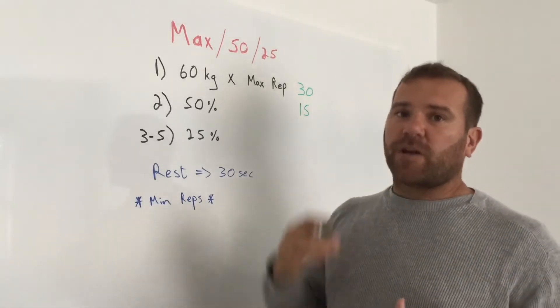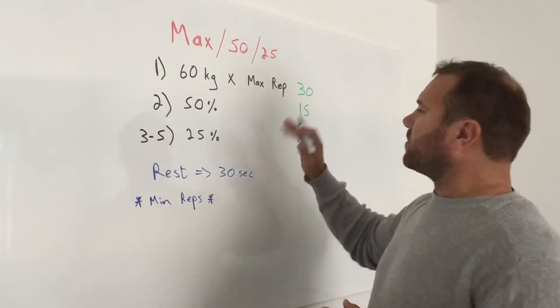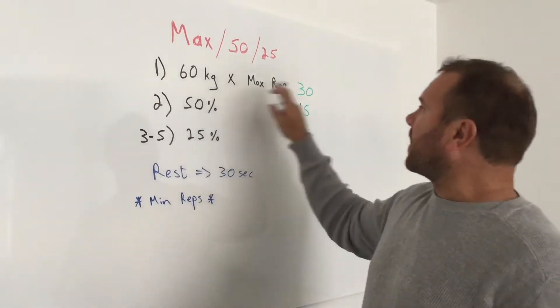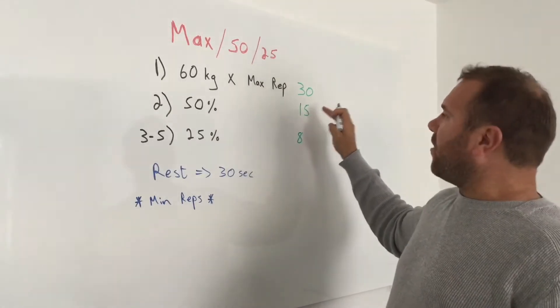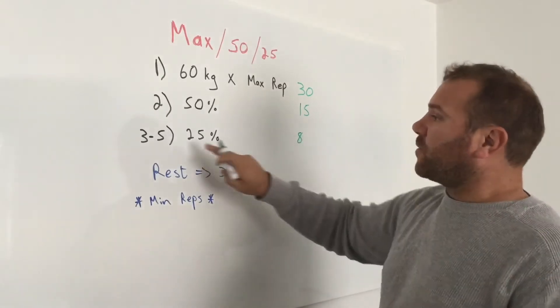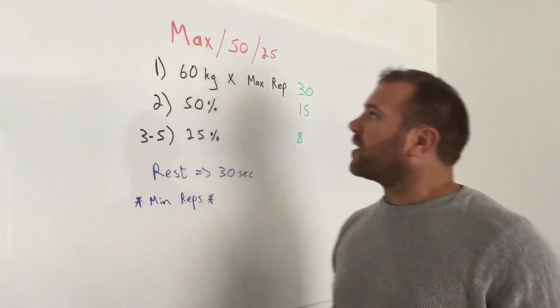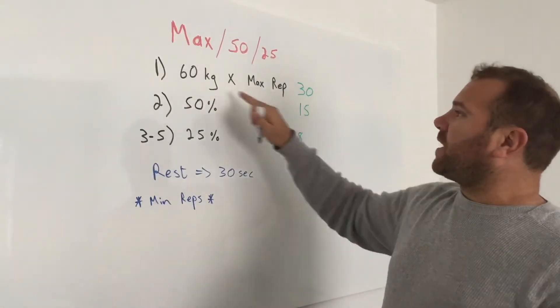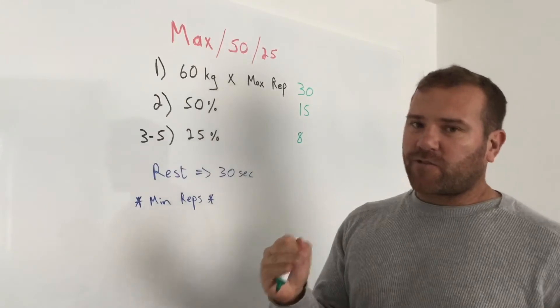Round it up to 8, and that's 25% of the maximum rep. That's your maths for today. Like I said, what we're doing is 60 kilograms as many reps as you can, 30 seconds rest, you're then going to go for 50% of what you did.